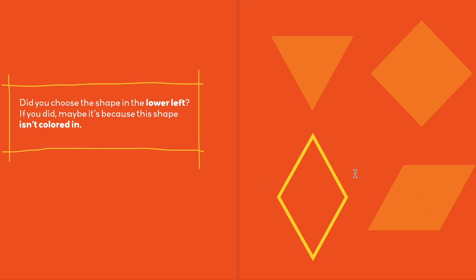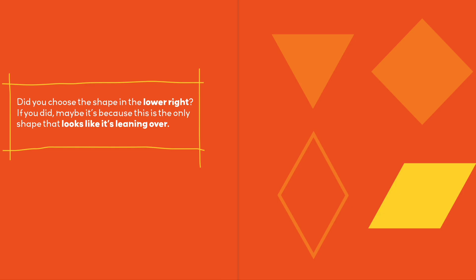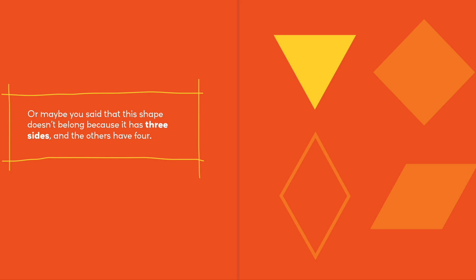Did you choose the shape in the lower left — this rhombus, the skinnier rhombus? Maybe it's because this shape isn't colored in. Did you choose the shape in the lower right? Maybe it's because this is the only shape that looks like it's leaning over.